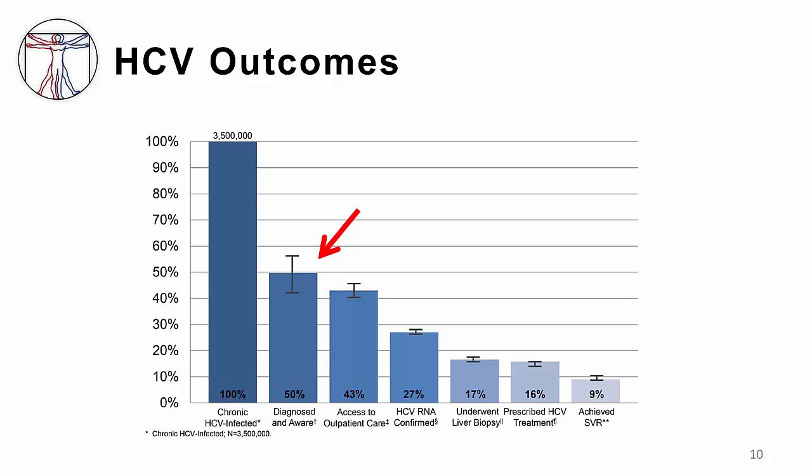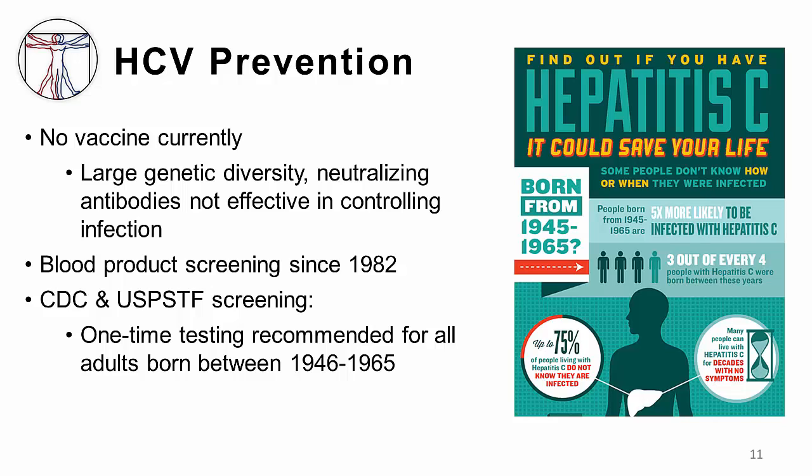Unfortunately, many adults do not know they are at risk of these severe complications because many do not know they are infected in the first place. Even fewer patients achieve a cure, known as a sustained virologic response or SVR. In terms of prevention, there is unfortunately no vaccine currently available for hepatitis C. Blood product screening was initiated in 1982, and the U.S. blood supply is currently considered quite safe. Adults born between 1946 and 1965 — the baby boomer generation — are now recommended to have at least a one-time screening for hepatitis C antibody.